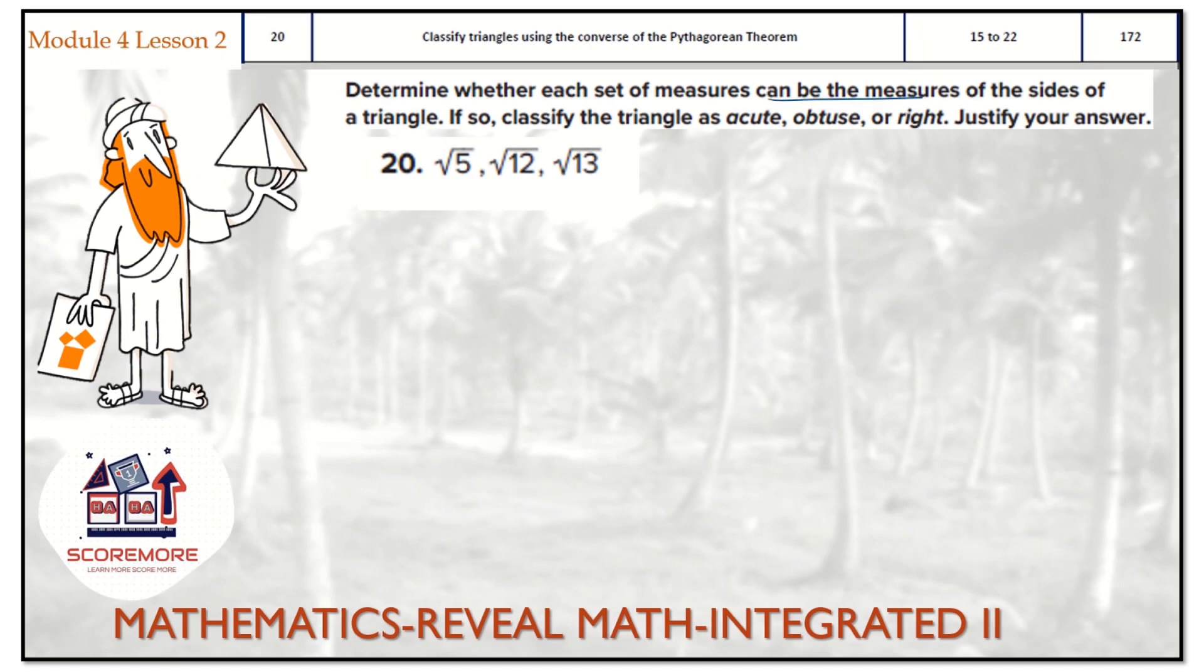The first thing you are going to find whether this is a triangle. For that, you can choose any two sides. Here I am choosing the first two, root 5 and root 12. And when I add them, I am getting 5.70. And then the third side which is root 13, when you put it in the calculator, you are getting 3.605. Obviously 5.7 is bigger than 3.6. So it satisfies the condition.